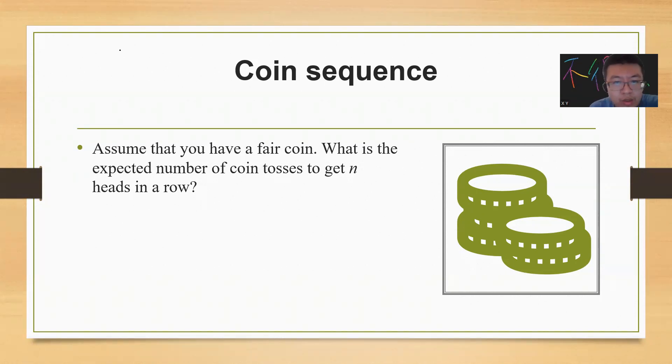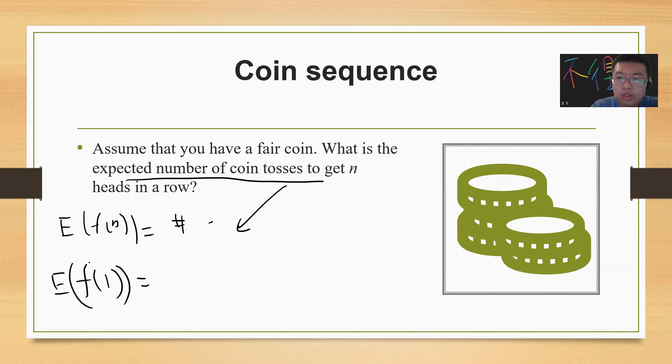You have a fair coin. What is the expected number of tosses to get n heads in a row? Let's denote E(n) to be the expected number of tosses to get n heads in a row. The first calculation you should do by yourself is very simple. What's E(1)? To get one heads, it's just 1 divided by half, which is 2, because the probability that you get heads is half. So you should expect to toss twice to get one heads. This should be very trivial.